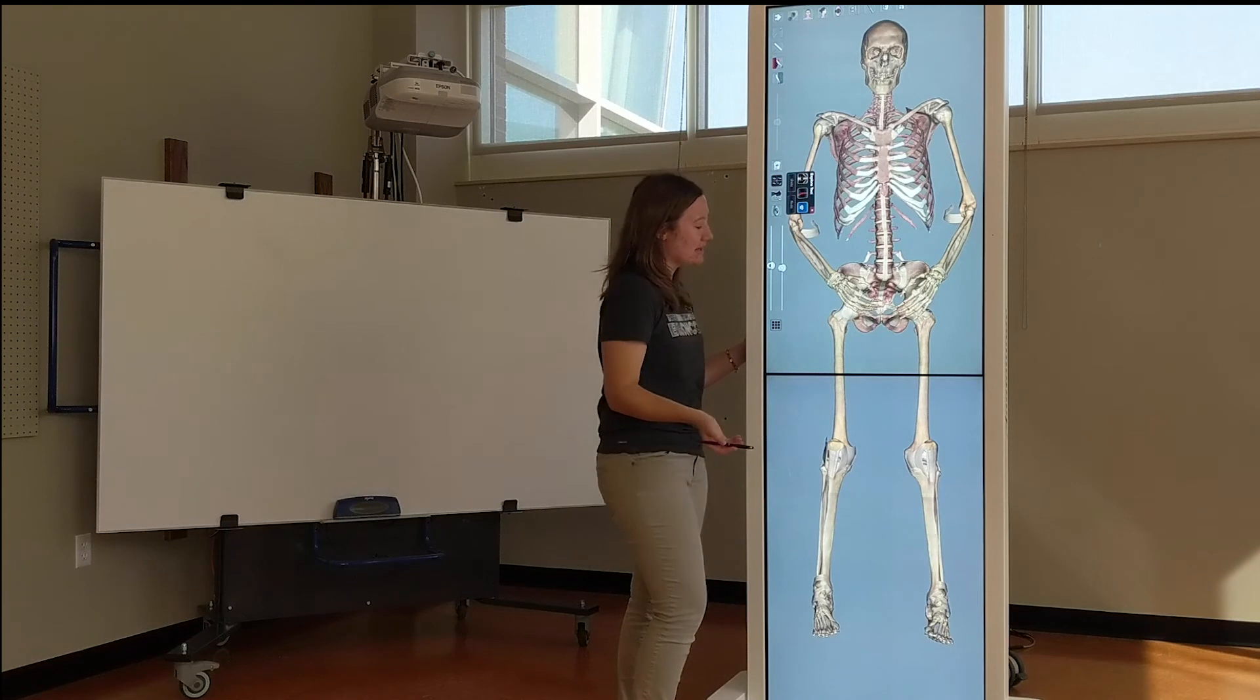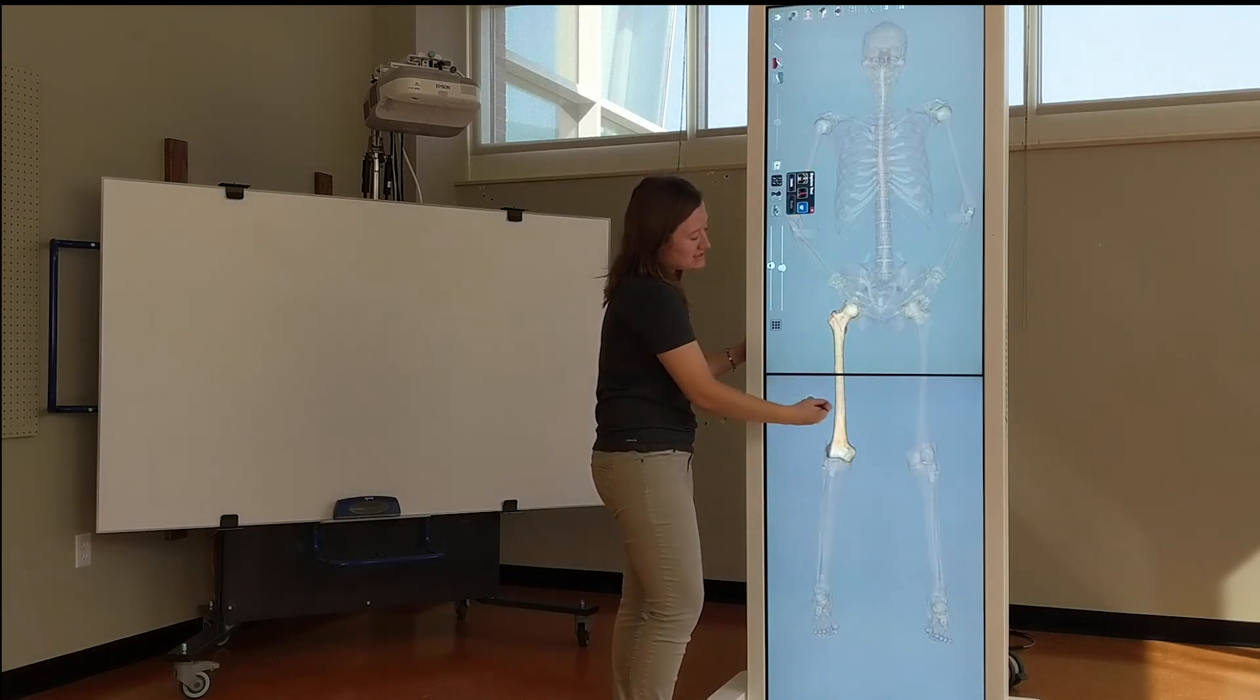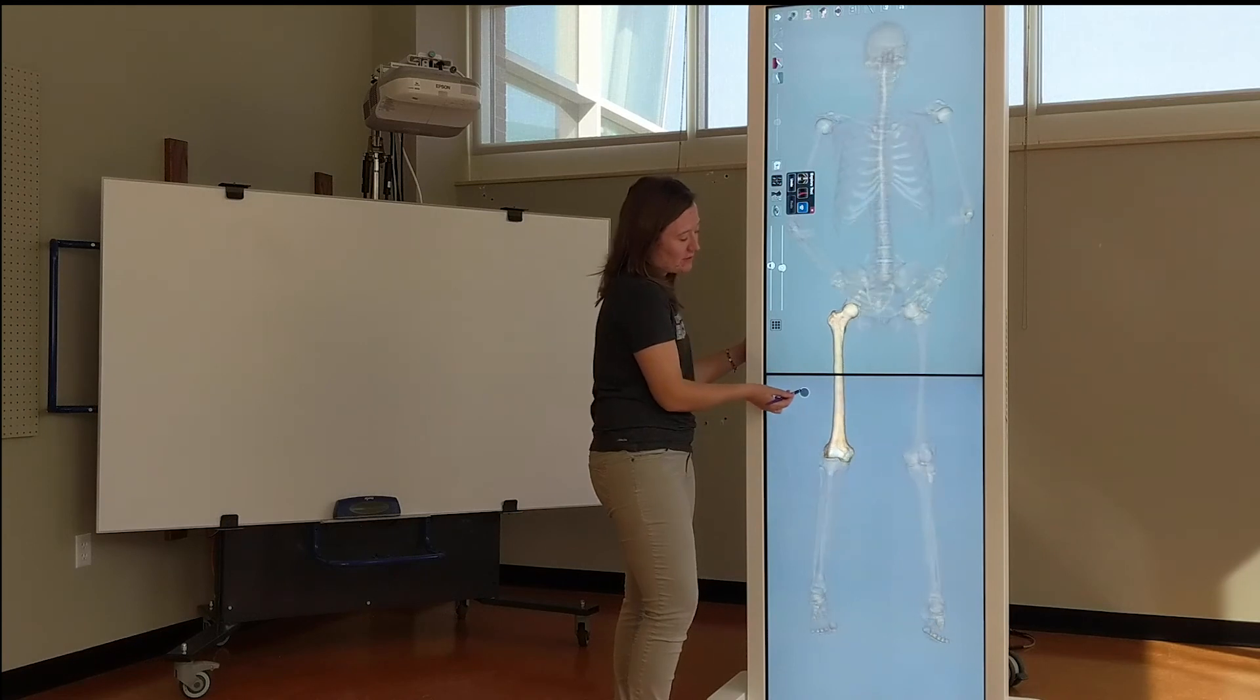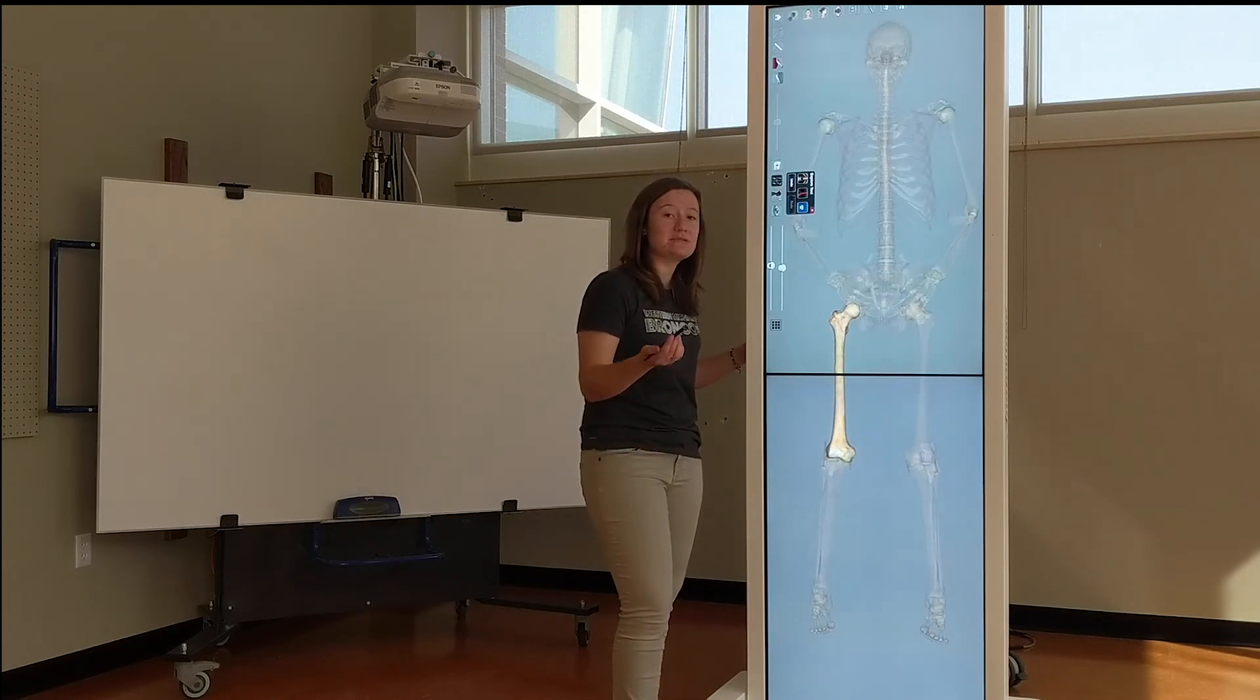And I am going to choose the isolate a bone feature. Here you can see I have isolated the right femur. This can make it easier to study so that you can specifically look at the exact area that you want.